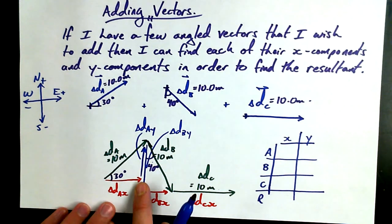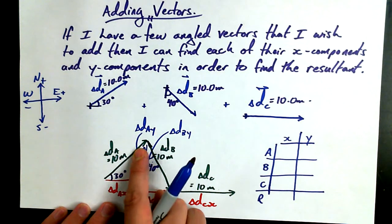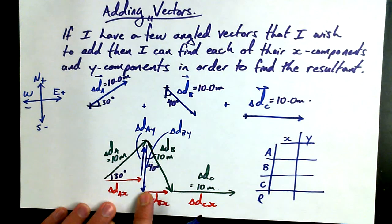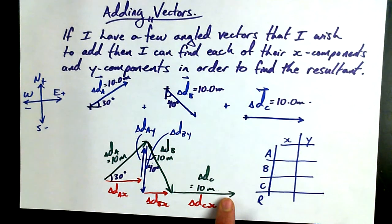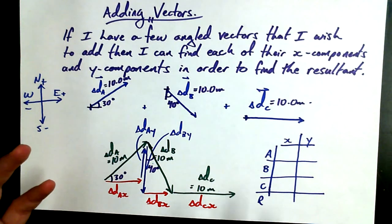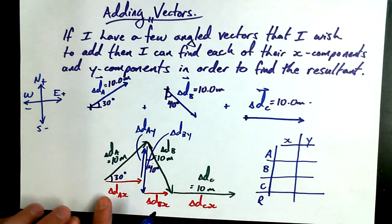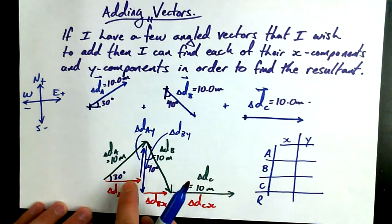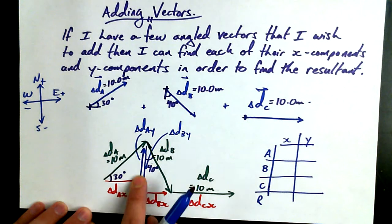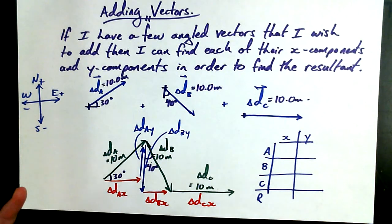Check out what's going to happen with the delta DY values. One of them is going to go up. One of them is going to go down. And one of them is going to have nothing. Can you see that I can add up all the delta DY values as well? This is what a resultant is. You add up all the values that are going in the x direction. And you add up all the resultant values in the y direction. And then we're going to deal with them separately again at the end.